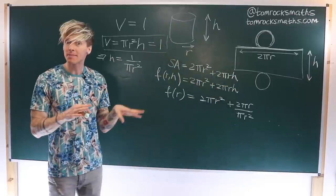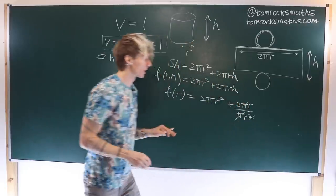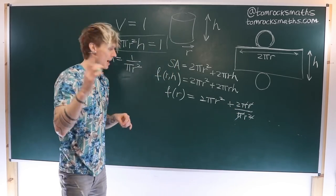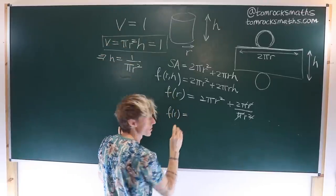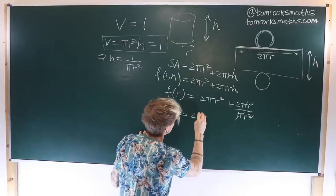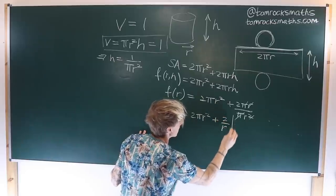We can now simplify this expression a little, so the π term will cancel as will the r term on the top with one of them on the bottom. And so what we'll get is that our function of r, which remember is the surface area we want to minimize, is given by 2πr² + 2/r.